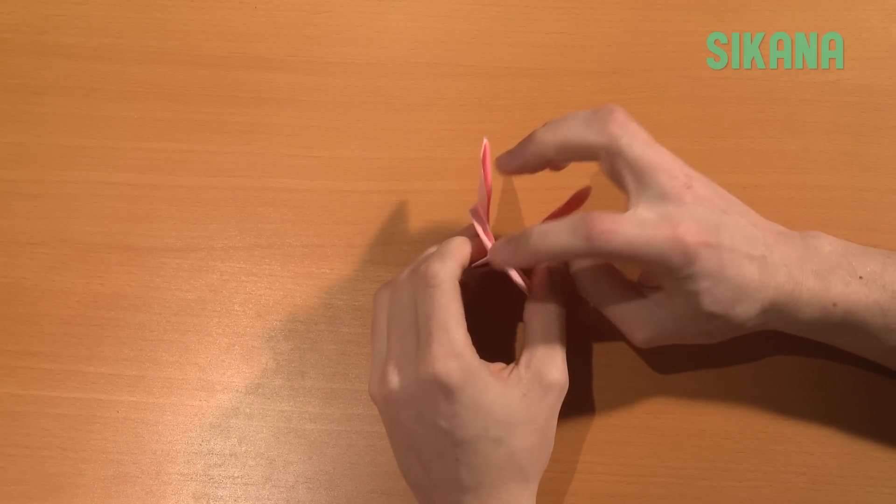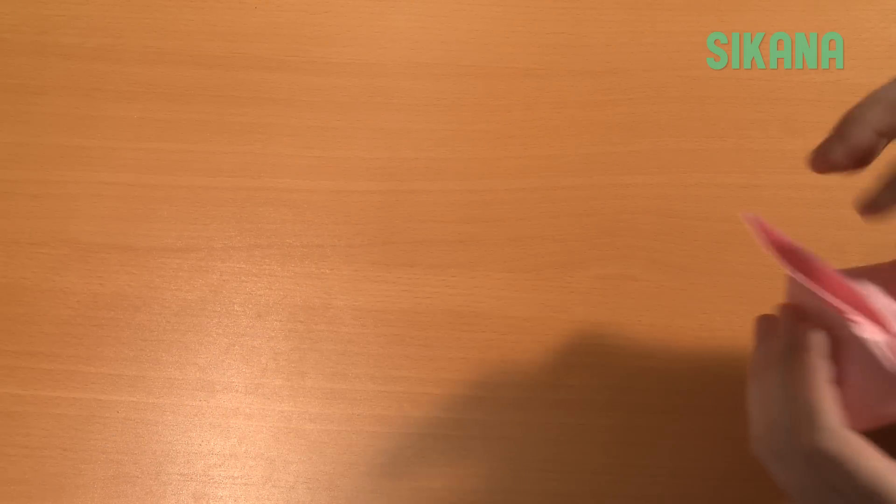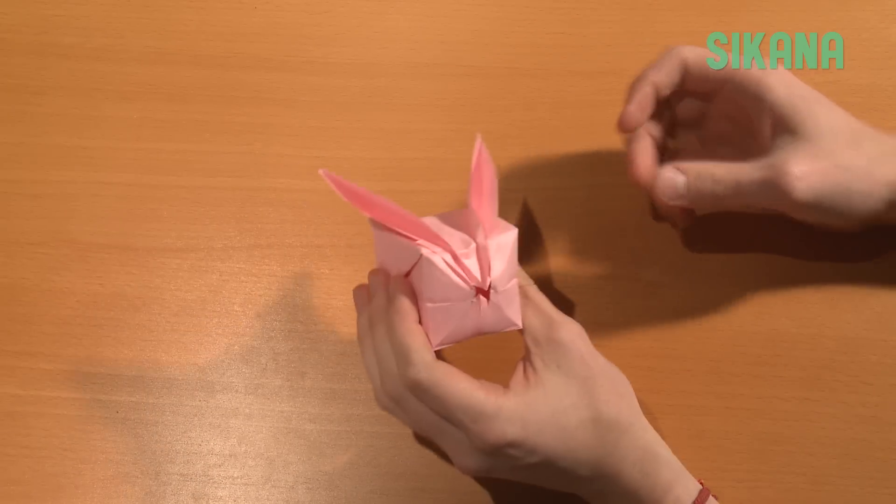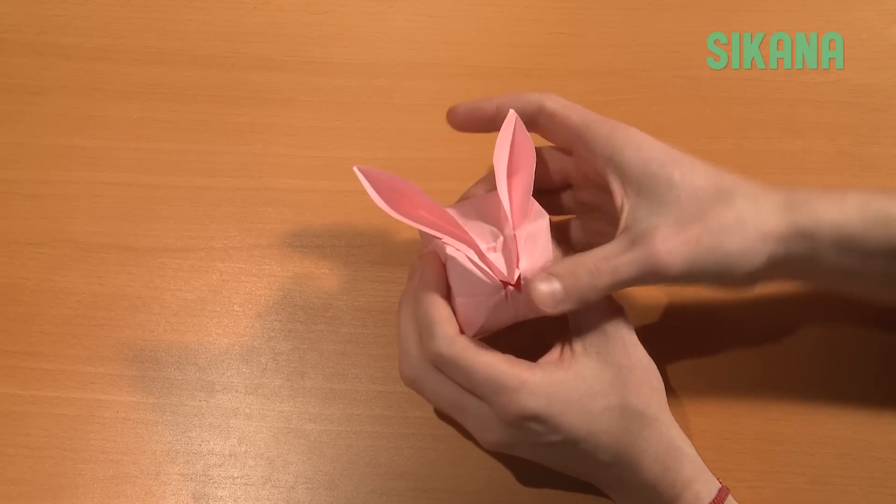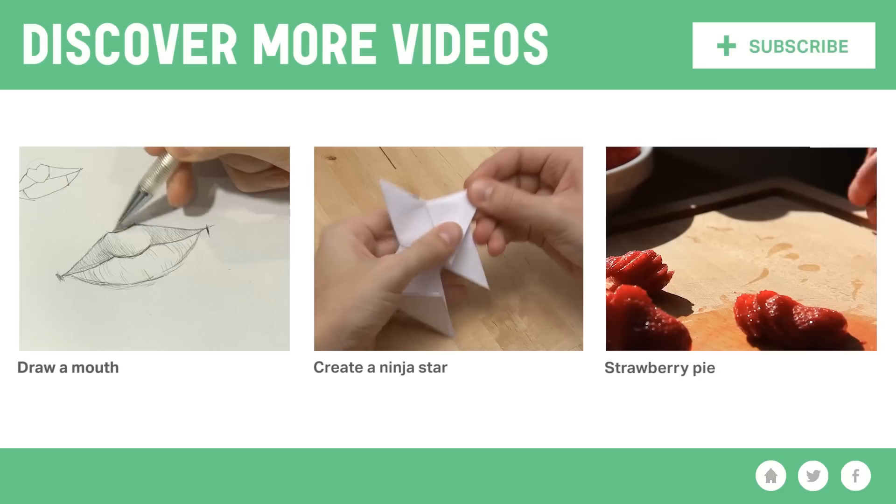Now blow into this hole here to inflate the rabbit. Now all you have left to do is finish up the ears. Repeat for the other side.